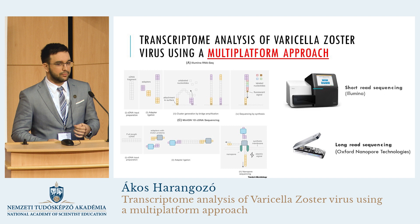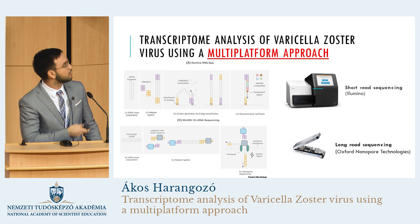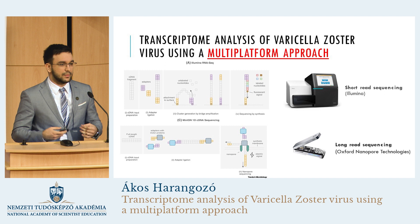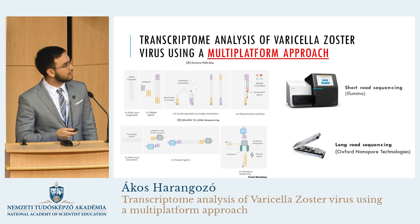For short-read sequencing, we use the Illumina platform, which uses amplified cDNA, and the signal is based on fluorescence signals emitted by the nucleotides that are incorporated into the sequence. In the case of long-read sequencing, we use a MinION device, which uses a membrane and a nanopore, where a motor protein brings a DNA fragment through the nanopore, and a detector detects the electrical signal based on the difference in potential across the two membranes.